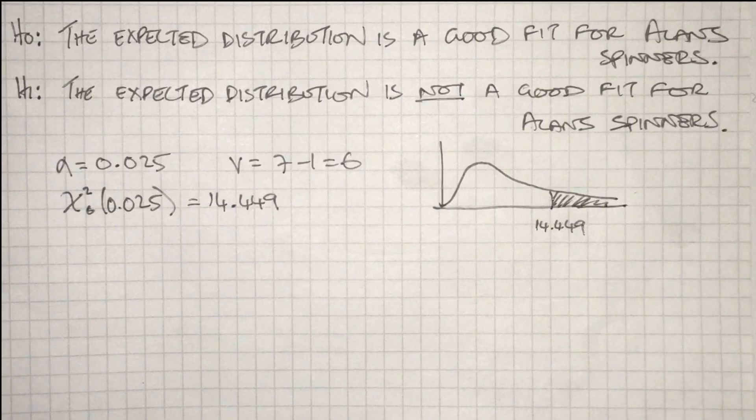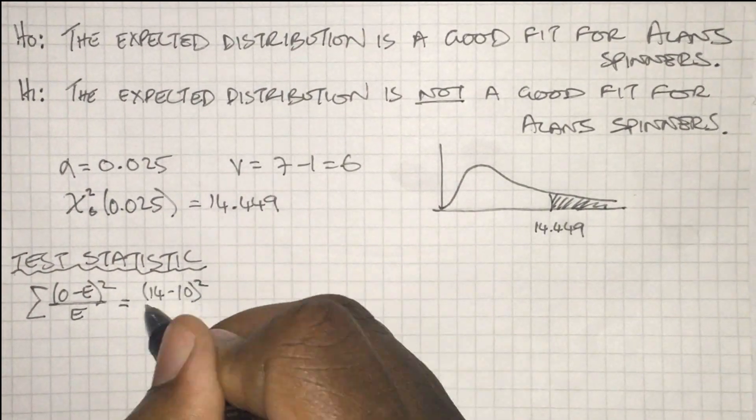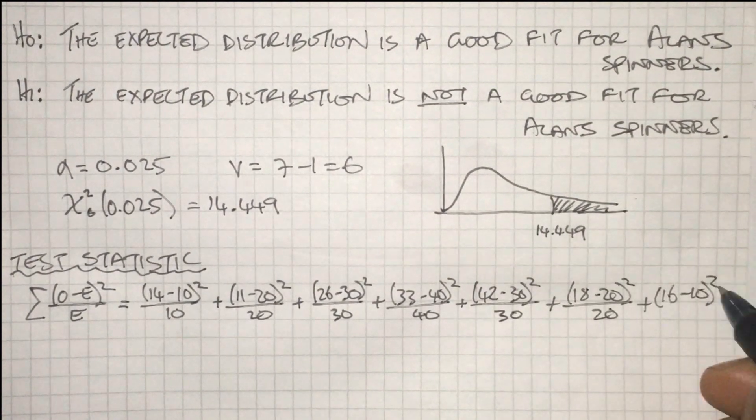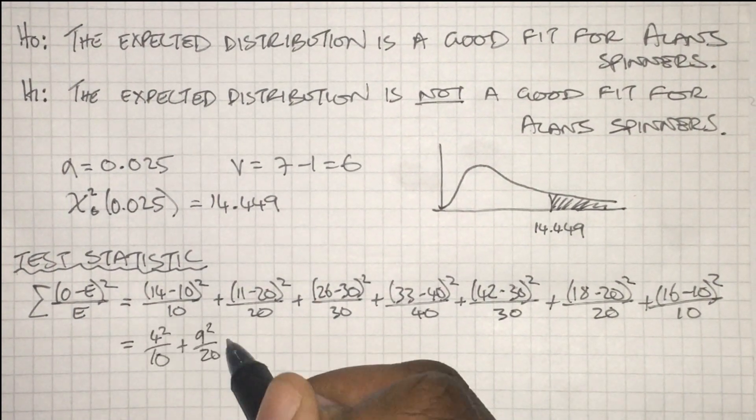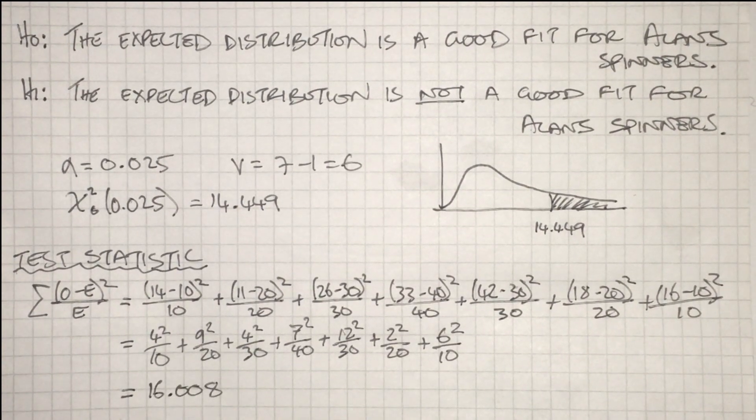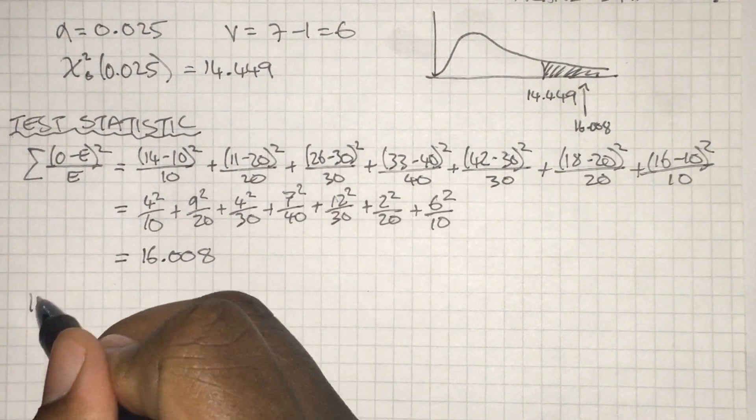Then I'm going to get busy calculating the test statistic: the observed minus the expected, square that, divide by the expected, so we get a proportion of difference. I'm just going to go ahead and process that calculation, and we actually get 16.008. This is larger than the critical value, inside the critical region.